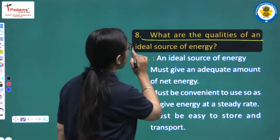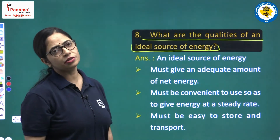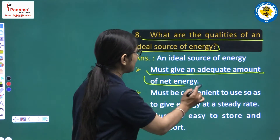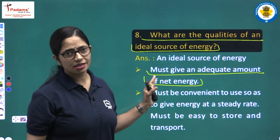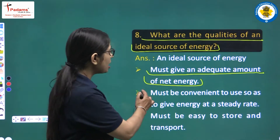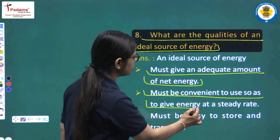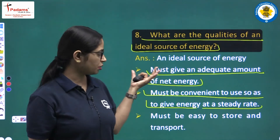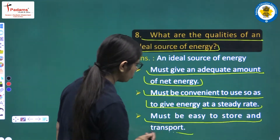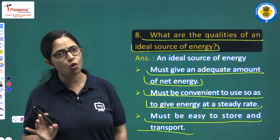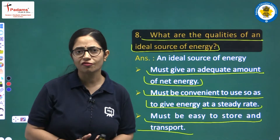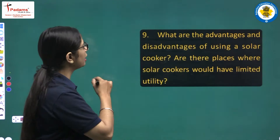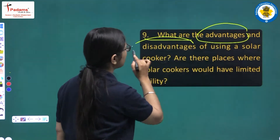Question number 8: What are the qualities of an ideal energy source? An ideal energy source must give an adequate amount of net energy, be convenient to use and give energy at a steady rate, be easy to store and transport, and must not have any risk factors associated with it.